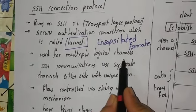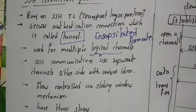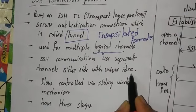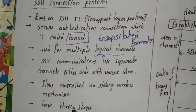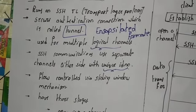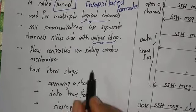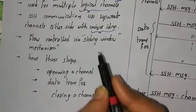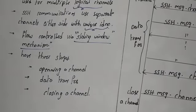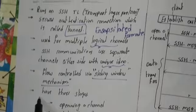A single packet is transmitted from client to server using multiple logical channels. SSH communications use separate channels, with each side assigned a unique ID number. Each channel established between client and server, or server to client, has a unique ID number. Flow control is implemented for data transmission using the sliding window protocol mechanism.